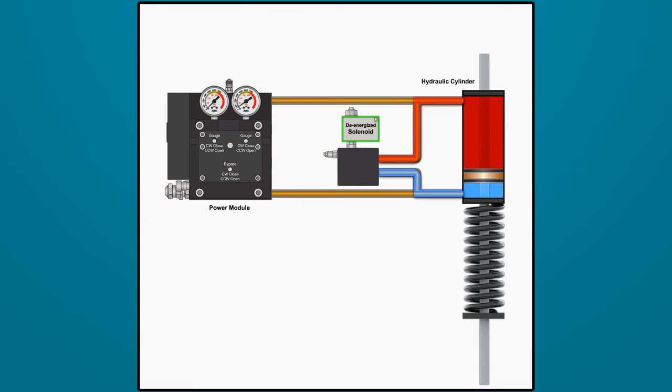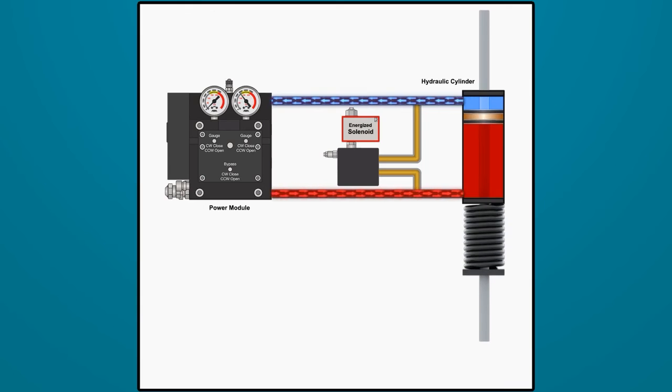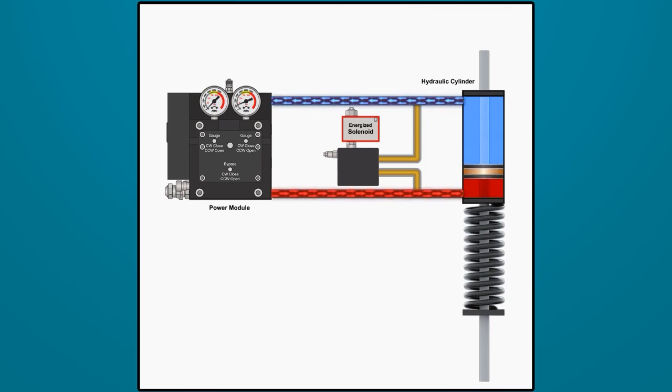The valve and actuator are returned to service by clearing the trip condition or restoring power. Once restored, the actuator returns to normal operation by modulating position with the power module.